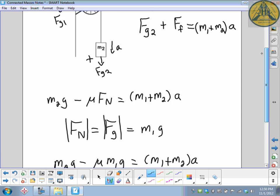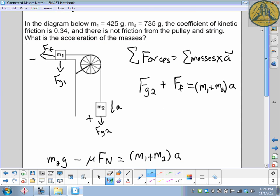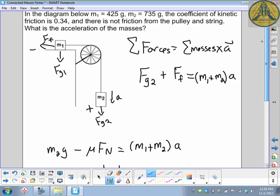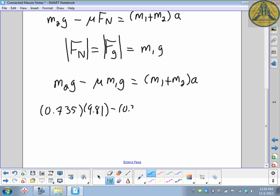So M2, it is 735g, M1 for 25, remember to put that in kilograms, times 9.81 minus the coefficient. The coefficient of friction for this problem is 0.34 times M1, 0.425, times gravity. All of that has to equal the masses, 0.735 added to 0.425 times the acceleration. So the only thing we do not know is the acceleration.